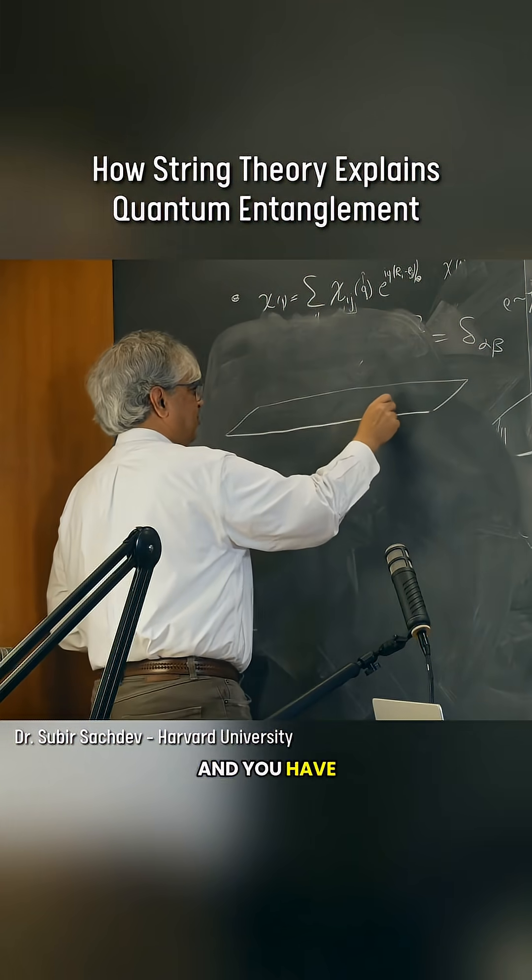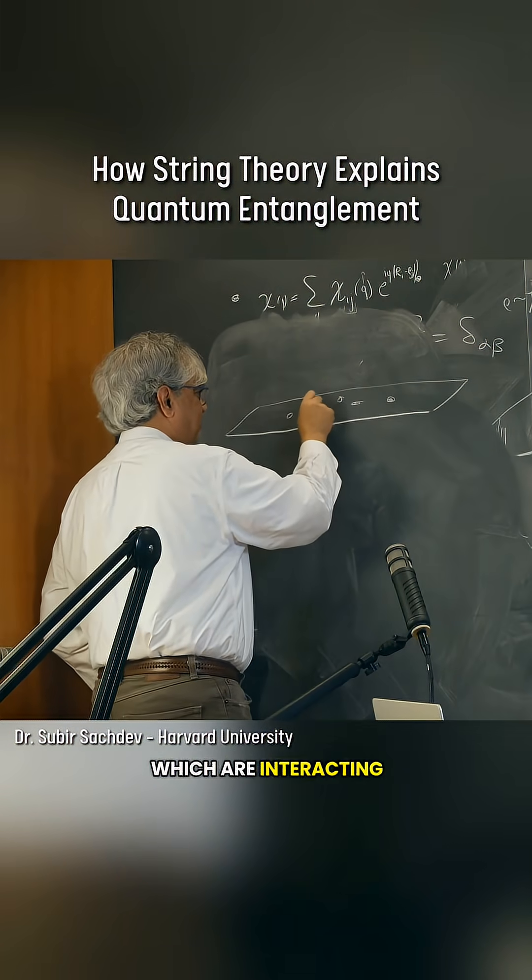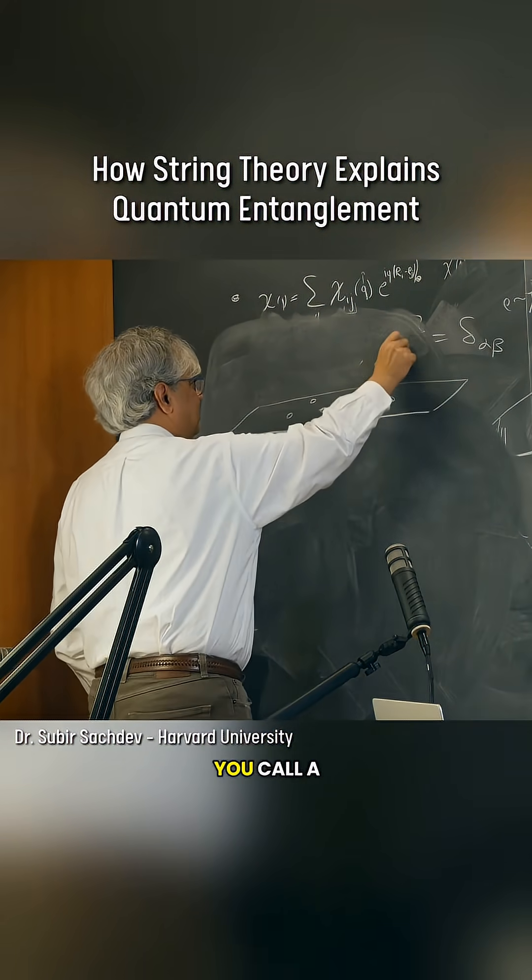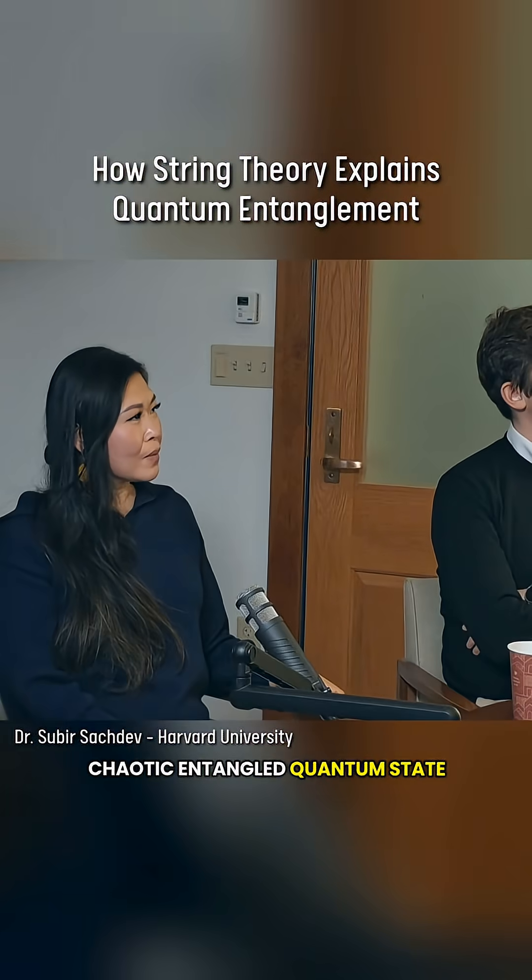So imagine you have some plane and you have a whole bunch of particles which are interacting strongly and forming some quantum soup. In the ADS-CFT this is what you call a conformal field theory. So it's a highly chaotic entangled quantum state.